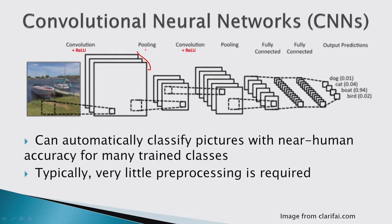You also have pooling layers where you take some areas and combine them using max pooling or average pooling into just one value, which helps keep the data under control — otherwise without pooling layers you might end up with too much data. Then you typically have another convolutional layer and pooling layer, and at the end of the CNN you have one or several fully connected layers.